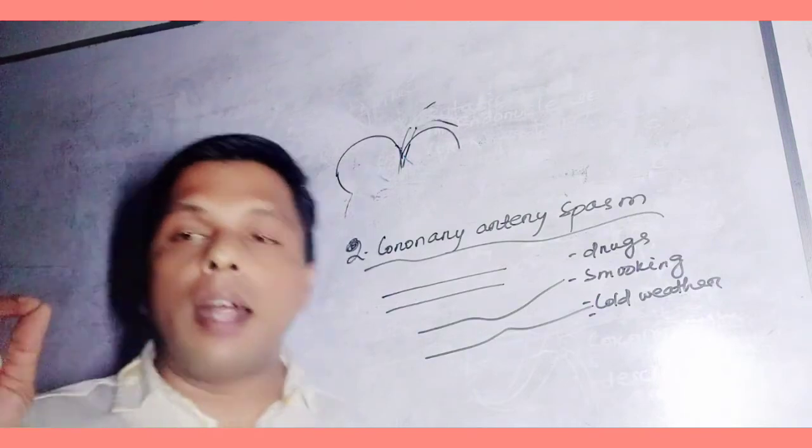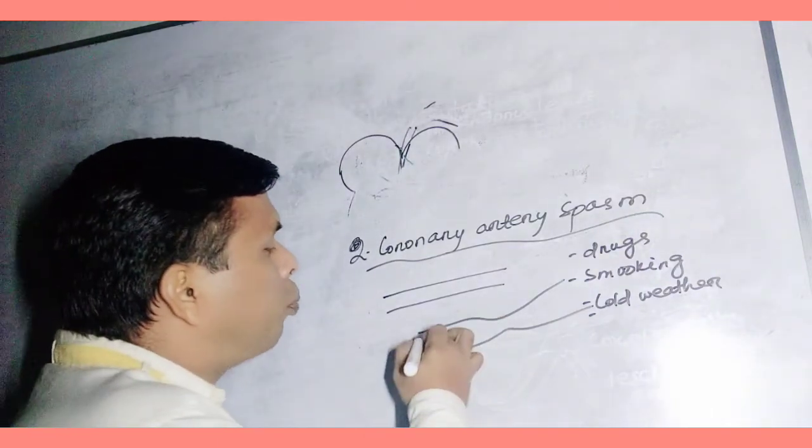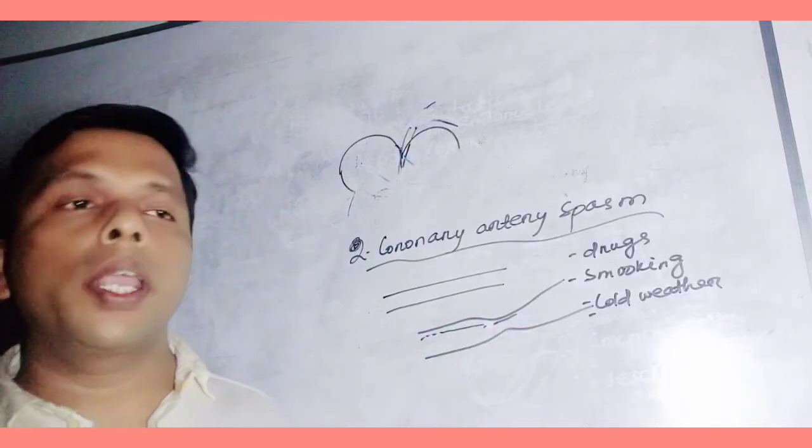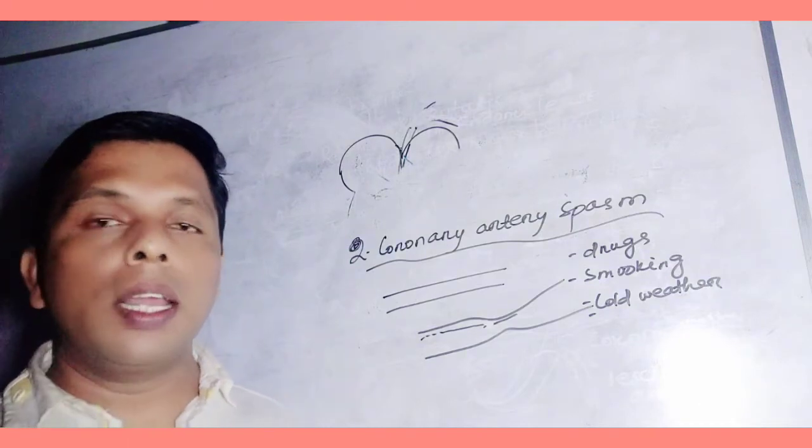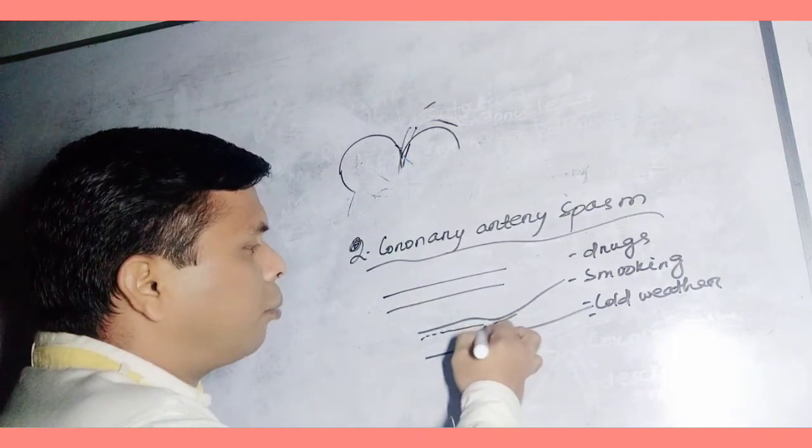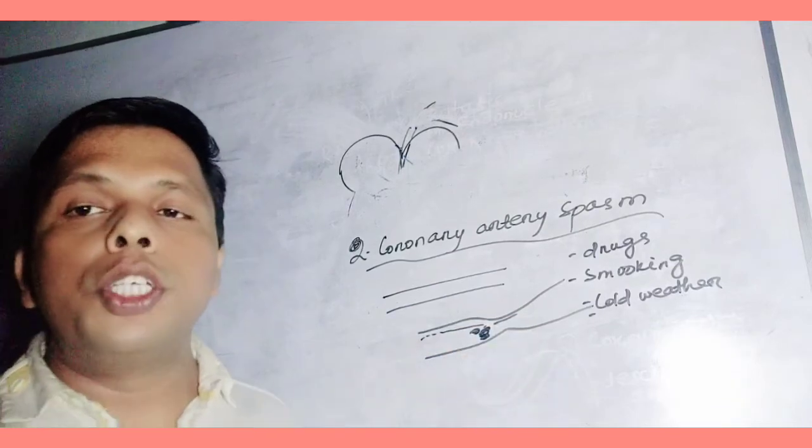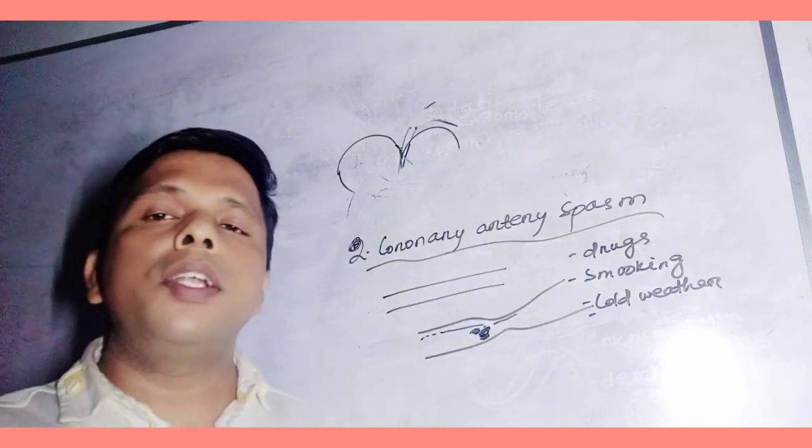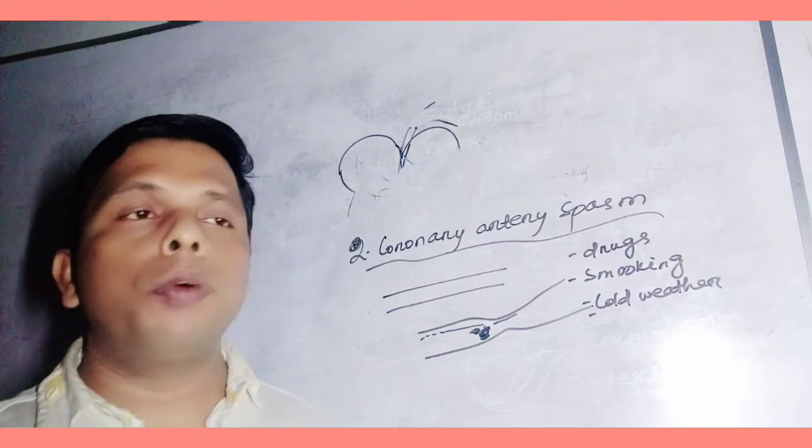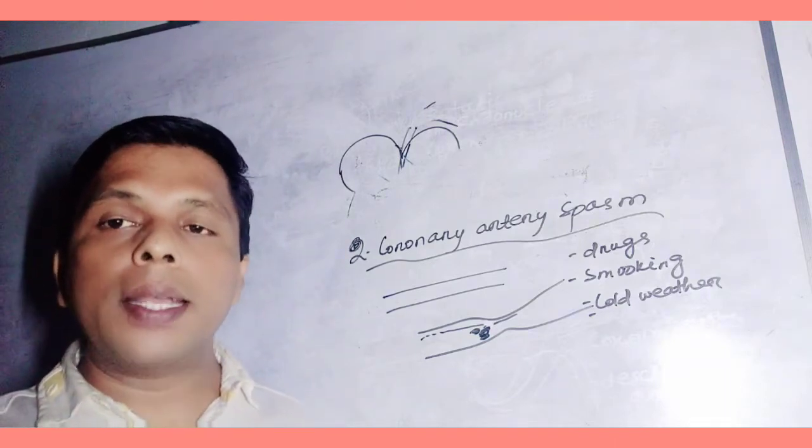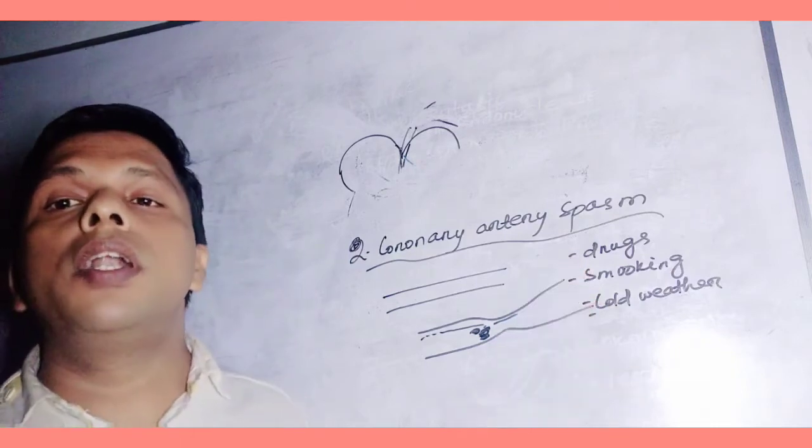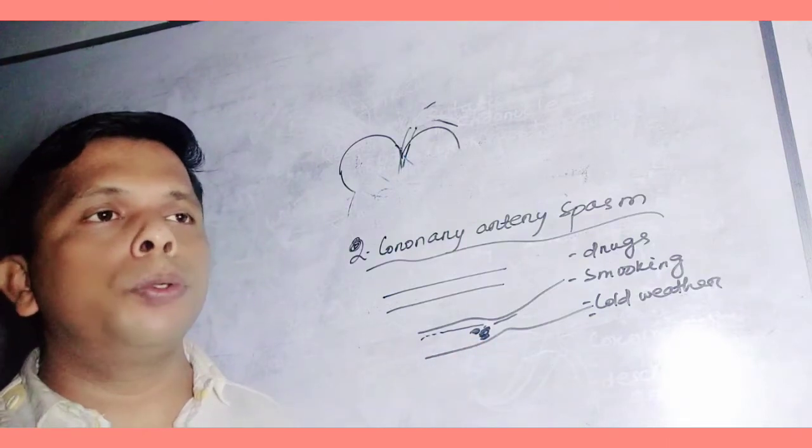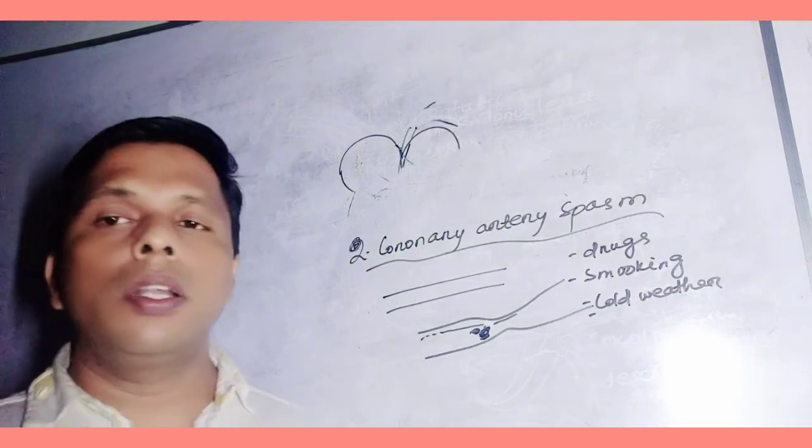The sudden tightening of coronary artery is called coronary artery dissection. Coronary artery dissection also causes splitting of the inner layer of coronary artery. So these are the two main causes of heart attack.